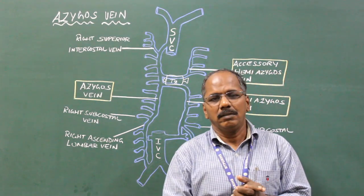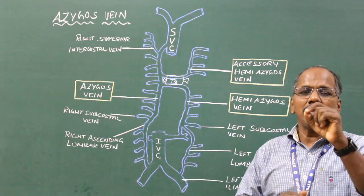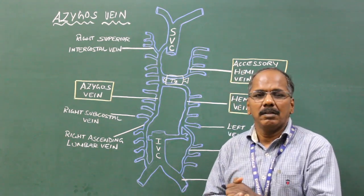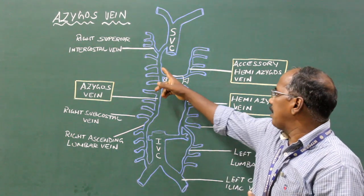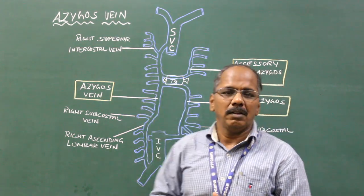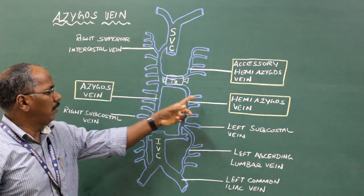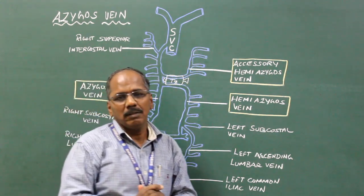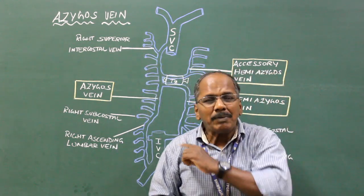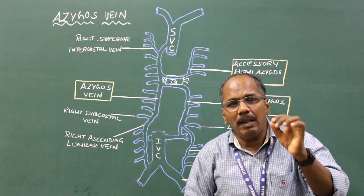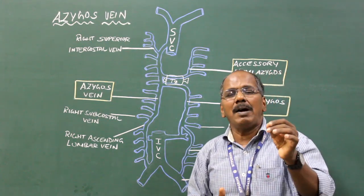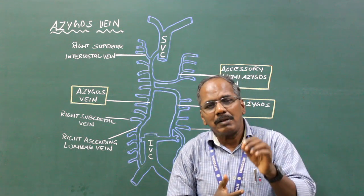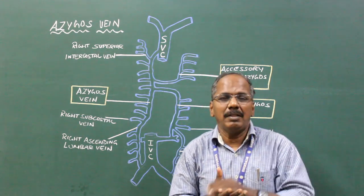Azygous vein. The term azygous means single. The azygous system of veins consists of the azygous vein, hemi-azygous vein, and accessory hemi-azygous vein. They play an important role in the venous drainage of the thorax and upper lumbar region. It forms an important collateral channel connecting the superior vena cava and inferior vena cava.